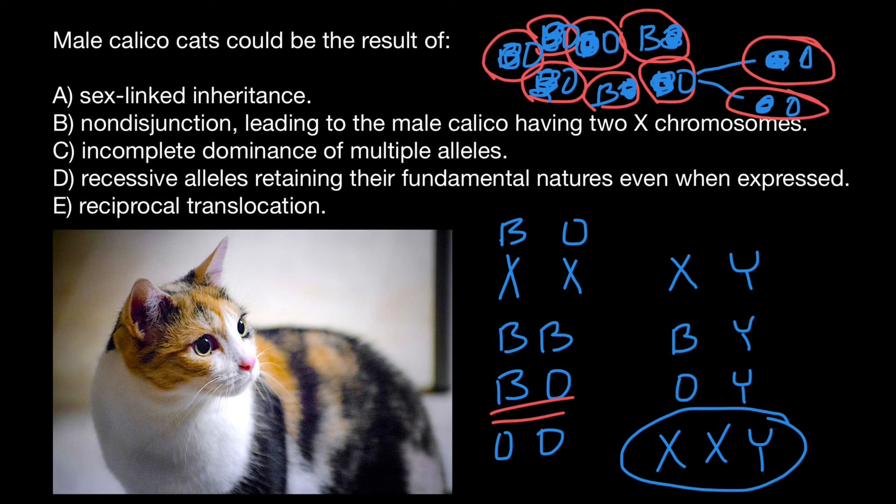So as you see, now we can choose the correct answer. And the correct answer is going to be answer B, non-disjunction leading to the male calico having two X chromosomes. This is rare event in males. So whenever you see a cat, which has this pattern of the coloration of the fur, we know that this is female cat. But if you will find that this is male cat, you instantly know that this cat has extra X chromosome.